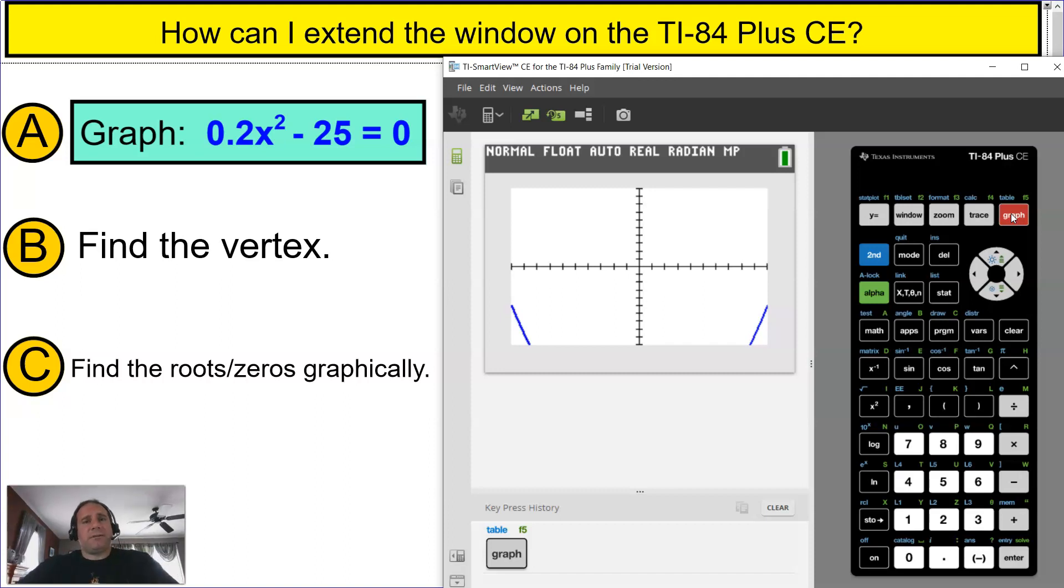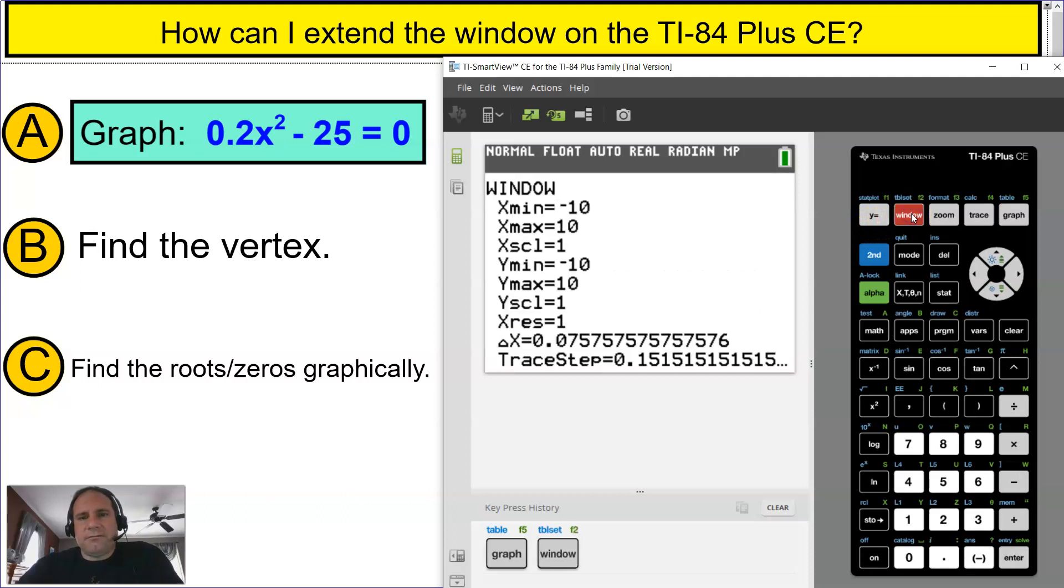So this is how you extend the window. If you think that you're going to press this window, you're correct. It's right there. So you just press window, and in this window it's the x-min. Think about the axis, the x-axis. The x-min is all the way to the left at negative 10, and the x-max is set at 10. Those are standards.